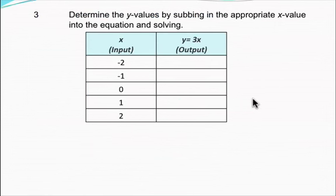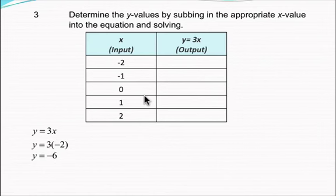So, we're going to determine the y values by subbing in the appropriate x value into the equation and solving. We've got y equals 3x, and our first value is going to be negative 2. So, our y value will be three times the input, which is negative 2. Three times negative 2 is negative 6. And so, we place that into our table of values next to the negative 2.